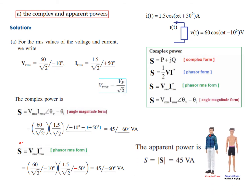The apparent power, as discussed in the previous video, is the complex power with the angle removed — just the magnitude. So apparent power S (non-bold) equals the magnitude of complex power S (bold), which is 45 VA.